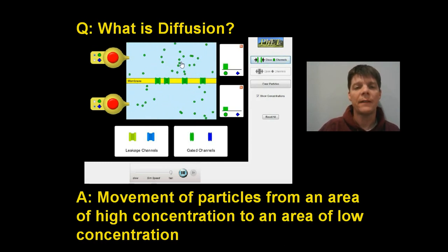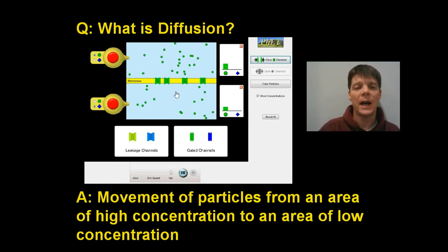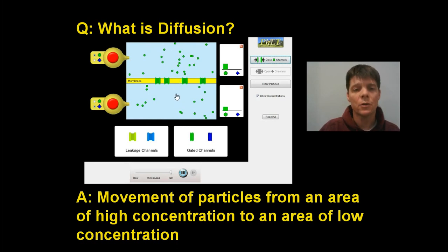What we want to see at the end of this is that the number of particles on both sides has become pretty close to balanced. If we allowed this video to keep playing, we would see that the concentration of these particles would achieve an equal status — equal concentration of green particles outside the cell and equal concentration of particles on the inside of the cell.